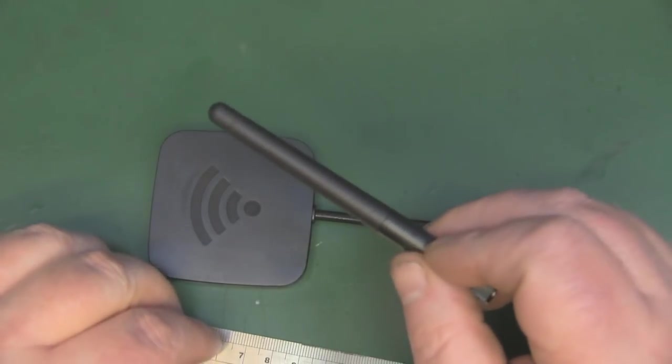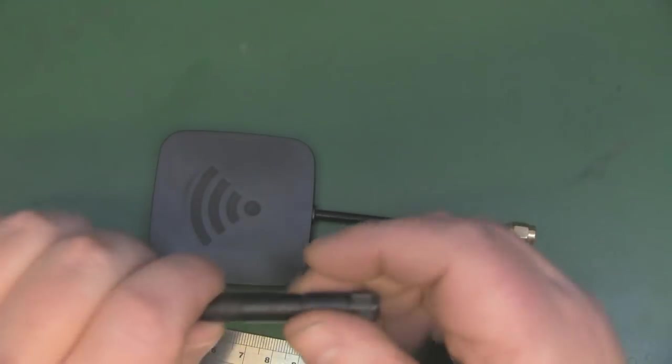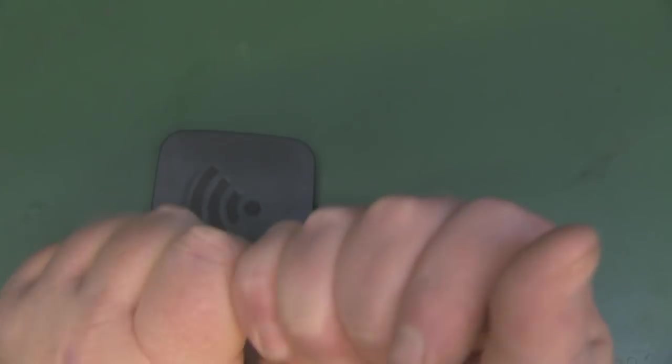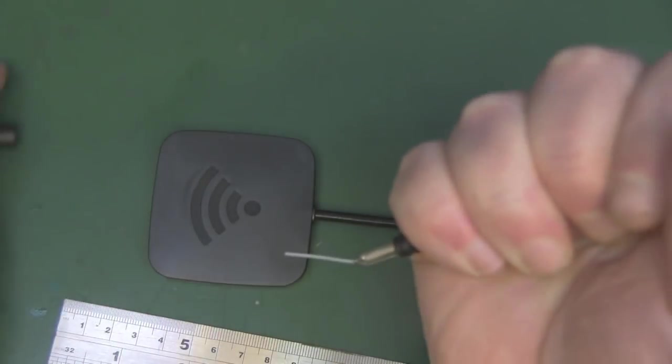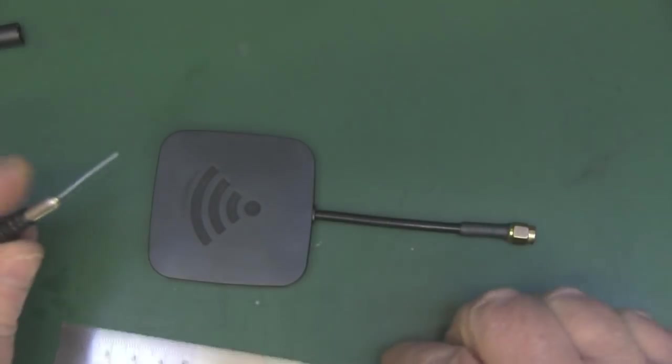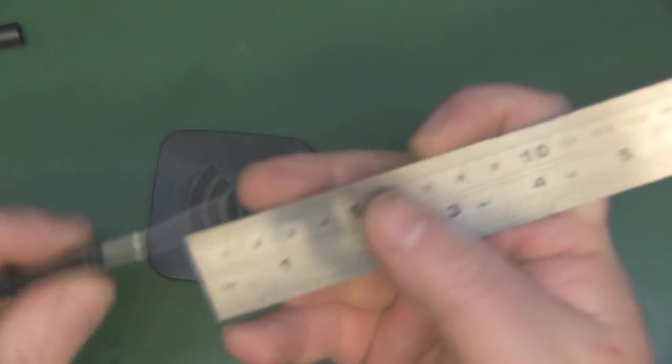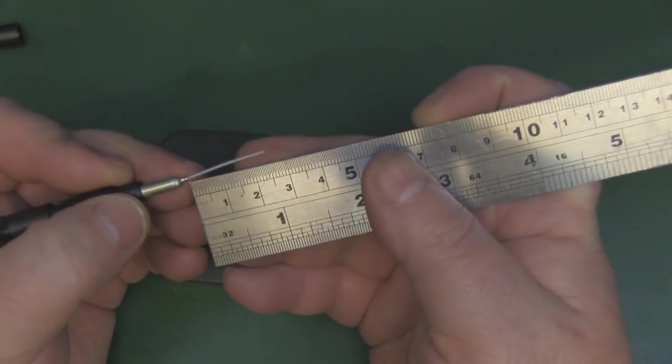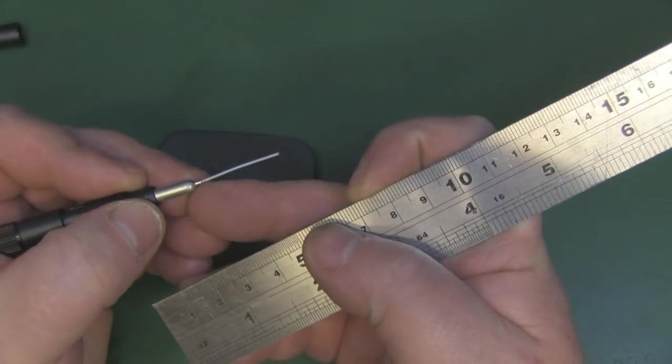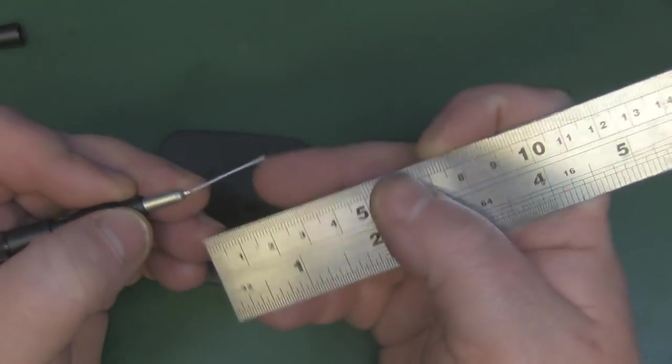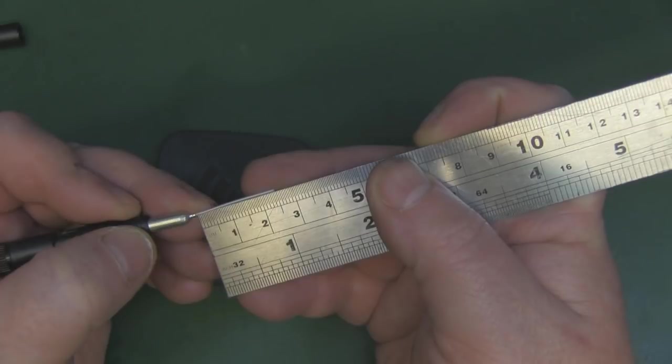Before I start testing the panel antenna, which is what I'm most interested in, let's crack open this little dipole antenna just to make sure it is 2.4 gigahertz.